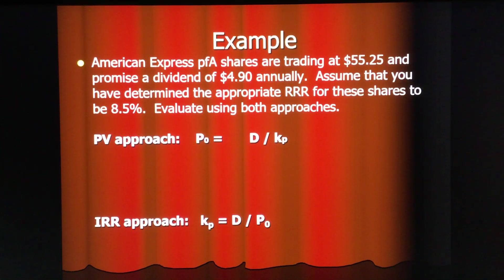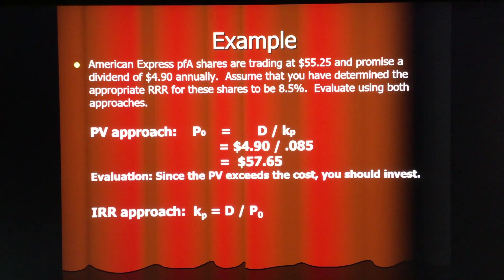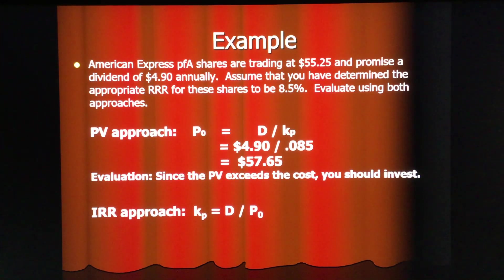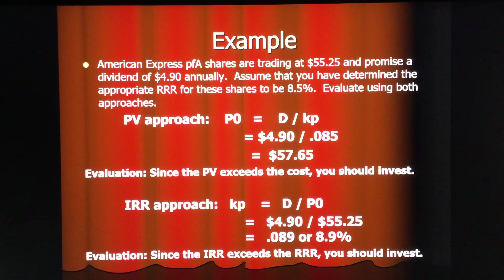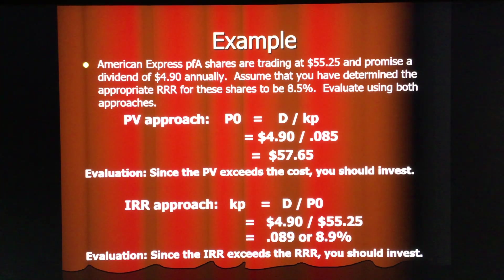Using the present value approach, we divide the dividend by the required rate of return and get a value estimate of $57.65. Our conclusion is that the present value exceeds the cost, therefore this is a good investment. Using the IRR approach, $4.90 divided by $55.25 gives us 8.9 percent. Since the internal rate of return of 8.9 percent is greater than the required rate of return of 8.5 percent, this is a good investment. Remember, these two approaches will always give you the same accept-or-reject decision.